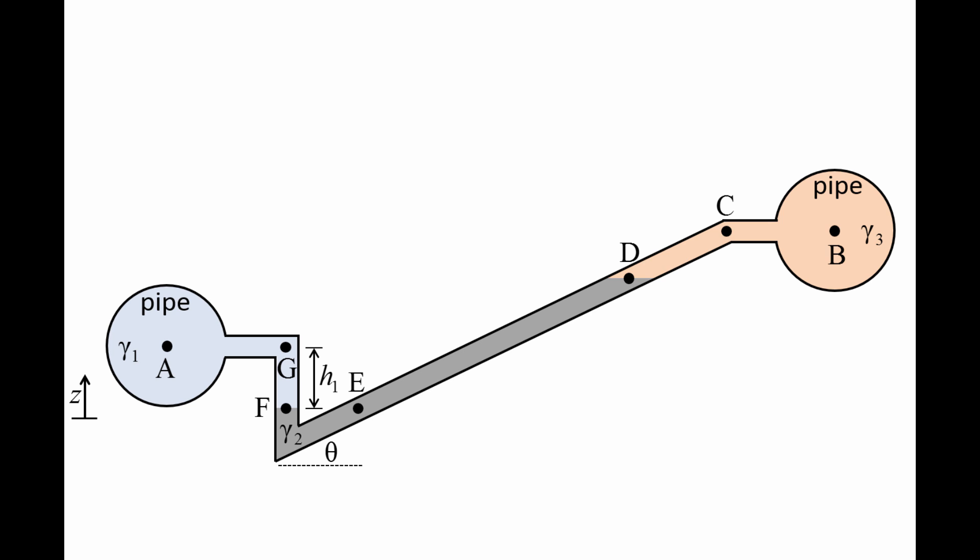Point E is located at the same elevation as point F in the gauge fluid. The vertical distance between point B and the interface of fluids 2 and 3 is height h2. The distance along the tube between points E and D is length L.